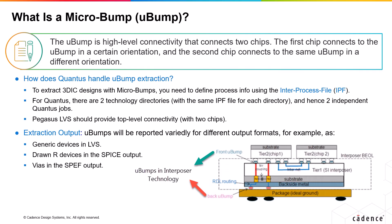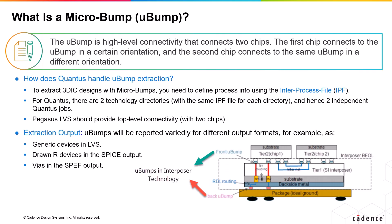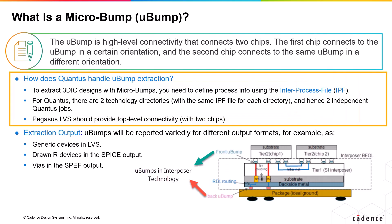Here's a short introduction to micro bump technology. Micro bump is basically a high-level connectivity that connects two different chips. The first chip would connect to the micro bump in a certain orientation, and the second chip also would connect to the same micro bump in a different orientation.